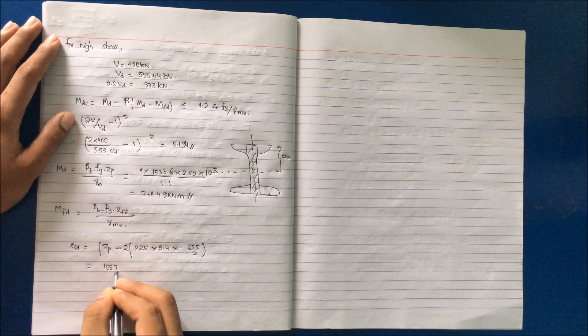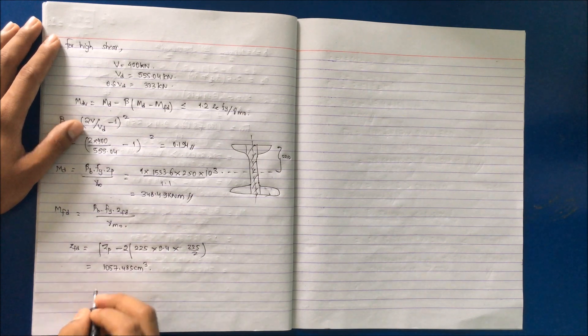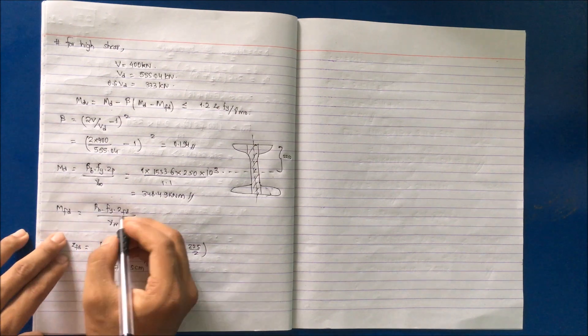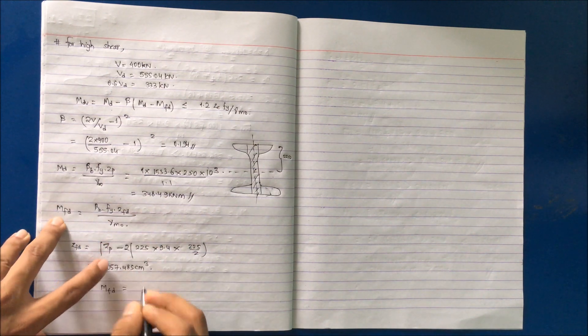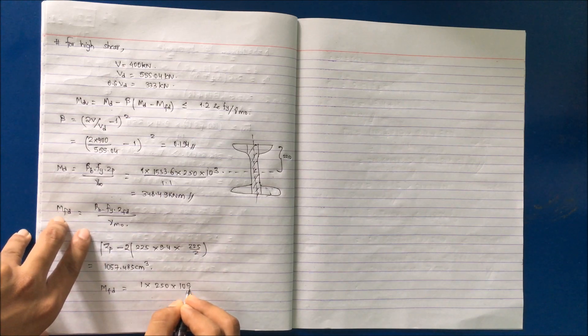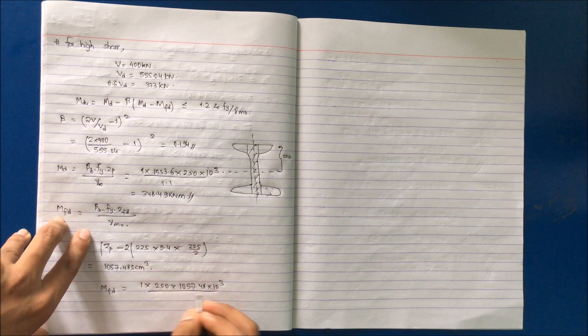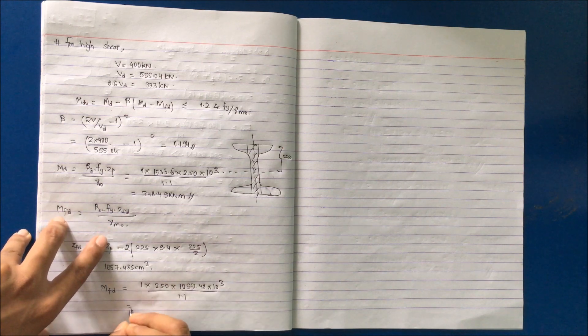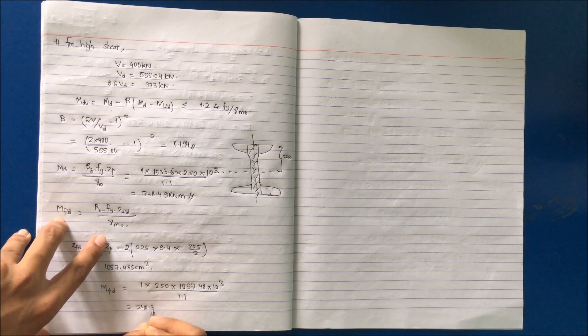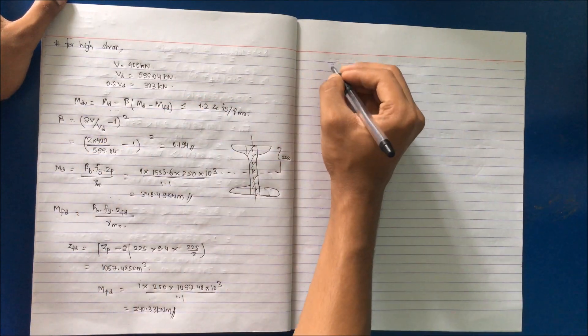This is the value of Zfd. Now substitute this value in the equation for MFD: 1 multiply by 250, 1057.48 into 10 to the power 3 to convert into millimeter, divided by 1.1. Then we get the value as 240.33 kN·m.